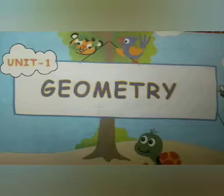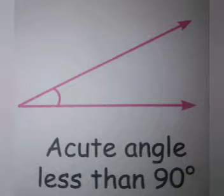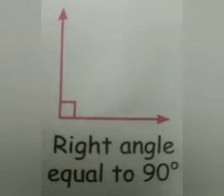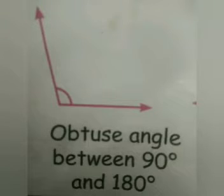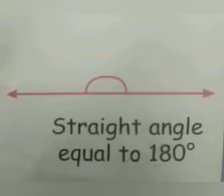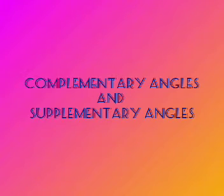Let's have a small recap about the types of angles which we saw previously. The first angle is acute angle — it is less than 90 degrees. The next one is right angle, which is equal to 90 degrees. Then obtuse angle, which is between 90 degrees and 180 degrees. And the last one is straight angle, which is equal to 180 degrees. Remember these every time you think about geometry.